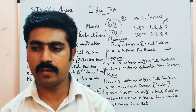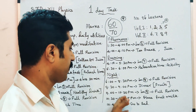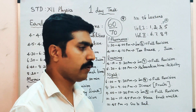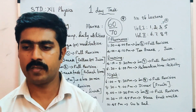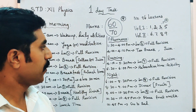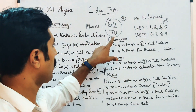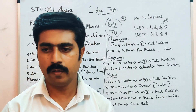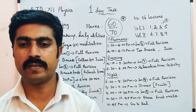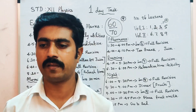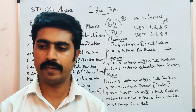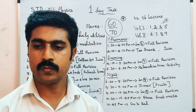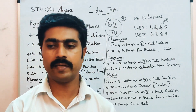10:30 to 10:40 PM — relax and go to bed. Have a light night snack: fruit and milk. Then 10:40 PM — sleep. Properly utilize the whole day from 70 marks down to 60 marks. This task is correct and useful for 3 days. Score good marks. Thank you, all the best, bye!